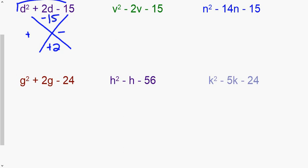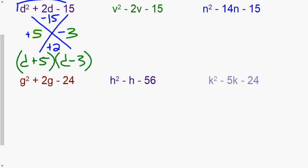What numbers multiply to be 15 and are two apart from each other? That's five and three. The question then becomes: is it five minus three, or three minus five, so that their sum is positive two? Five minus three equals positive two, so that's correct. The variable is d, so positive five is the first factor and negative three is the second: (d + 5)(d − 3).